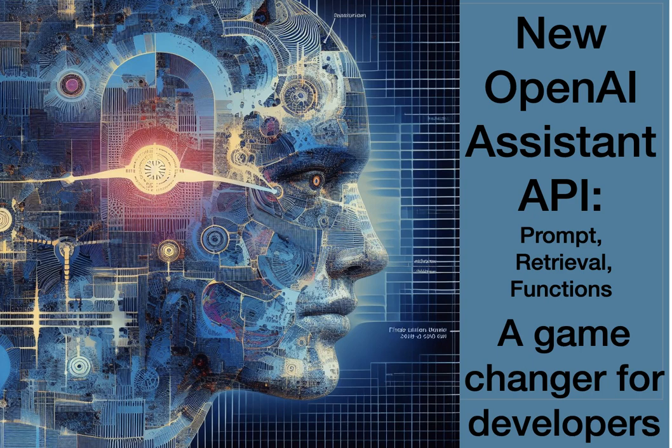Thank you for explaining the features of the OpenAI Assistant API. It sounds like a powerful tool for building custom chatbot applications. However, I have a few questions and concerns. Firstly, you mentioned that the Assistant API allows developers to access external APIs to enable actions. Could you provide more details on how this integration works? Are there any limitations or security considerations when using external APIs with the Assistant API?